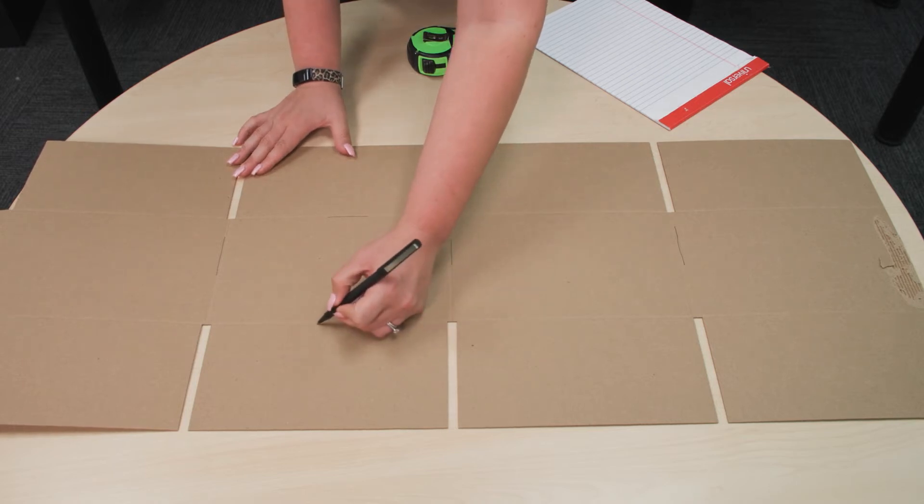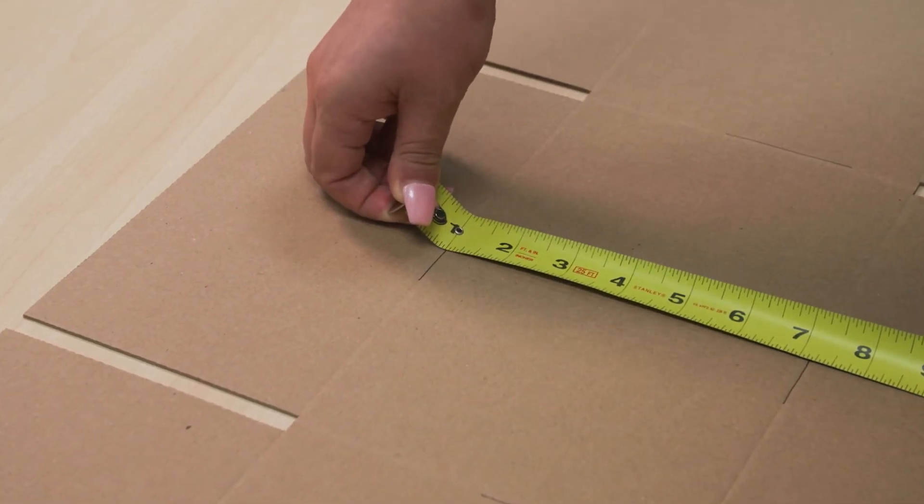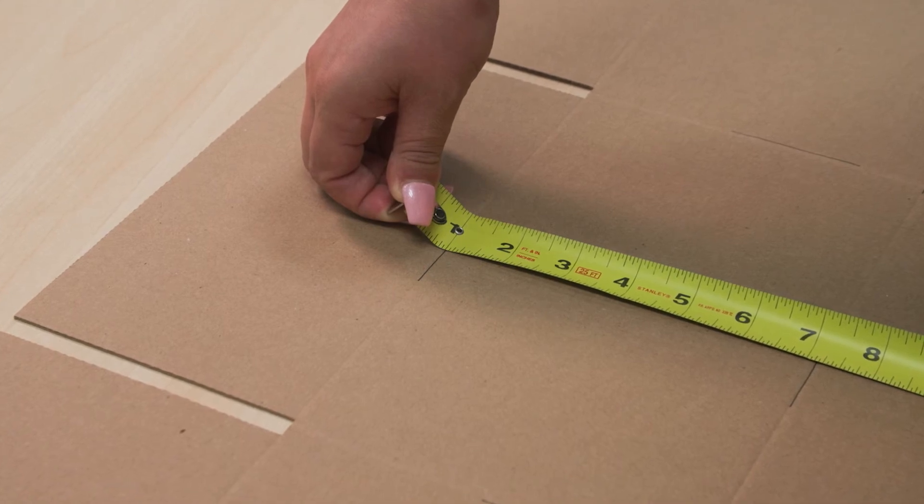Starting at the one inch mark for accuracy, use a tape measure to measure the length, width, and depth of your box by measuring the distance between the marked scores.